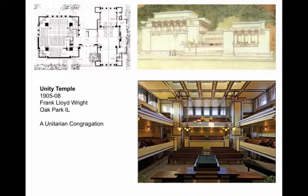Here is Frank Lloyd Wright's Unity Temple — it's a Unitarian congregation. The main church works with a double balcony going all the way around, and the minister — not priest — is here. We're kind of sitting in this horseshoe so that we can look at each other as part of a community. So three different religious attitudes, three different architectural arrangements.